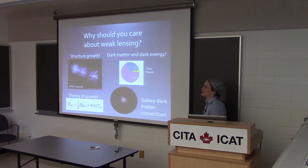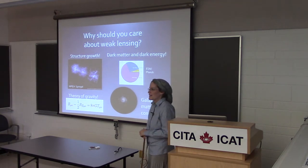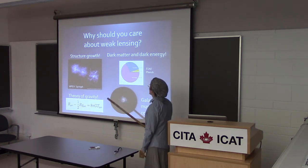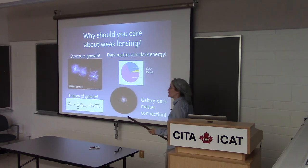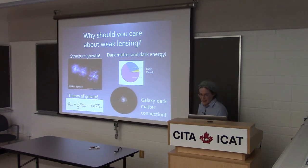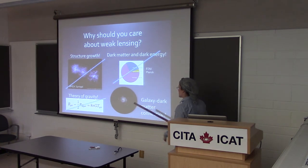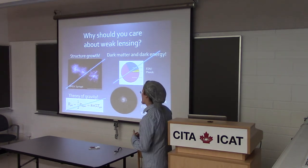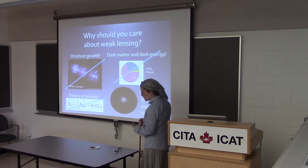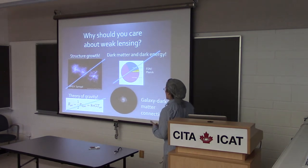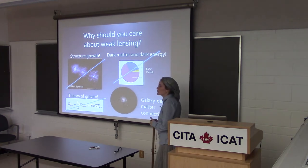In terms of the science you can do with weak lensing: we can use it to measure the growth of structure as a function of time, which tells us about dark energy; we can use it to constrain gravity; and we can use it to make a connection between galaxies and dark matter. For today, we're going to forget about the other applications and focus on this last one. For the purpose of questions about galaxy formation and evolution, our primary concern is our ability to make a connection between the optical properties of galaxies and the underlying dark matter halos.